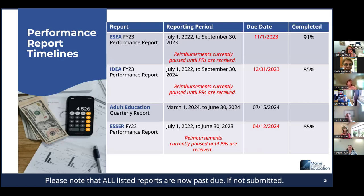The next slide is overdue performance reports, and the due dates have passed long ago for most of these. ESEA is at 91% complete. This will impact your substantial approval for your FY25 funds, and IDEA is at 85% complete. Adult education is complete, and the SR-FY23 performance report is at 85% complete as well.